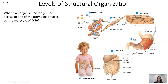To get started looking at how the very small impacts the very large, let's take a look at this diagram on structural organization. The very smallest scale is atoms, which builds into molecules, then cells and tissues, organs, systems, and finally the organism level.